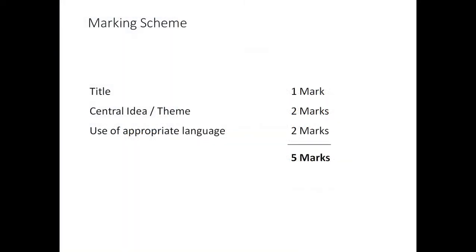The marking scheme for summary writing. Title consists of one mark. For the central idea or theme you get two marks and for use of appropriate language it's two marks. So totally summary writing has five marks.